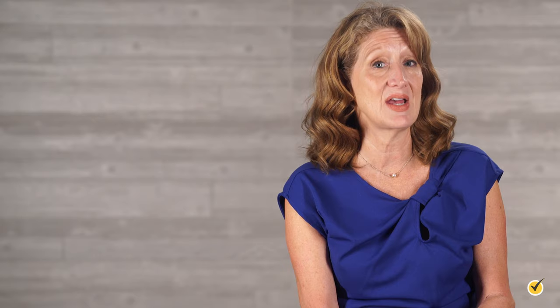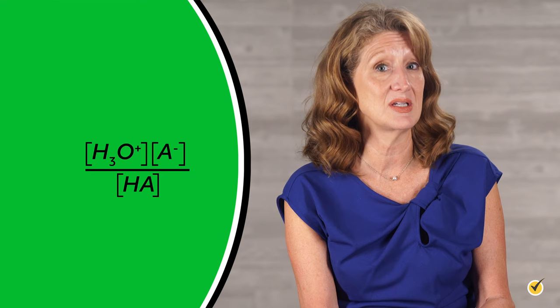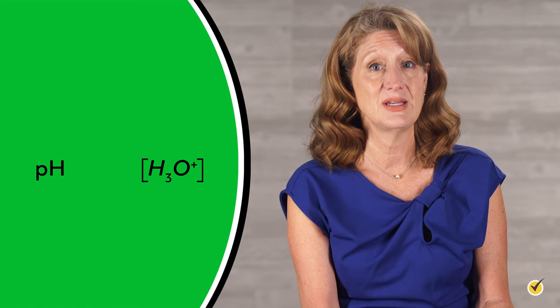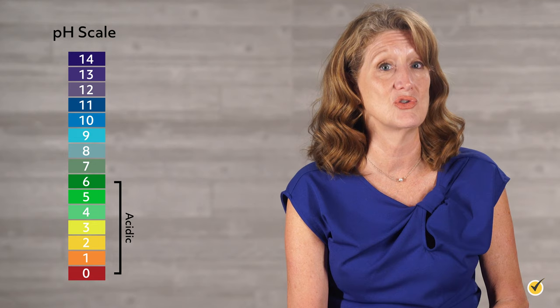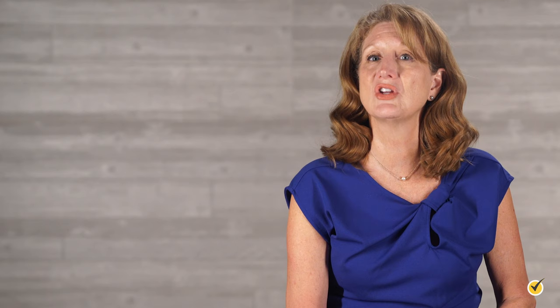We can quantitatively describe the dissociation of acids using the acid dissociation constant, Ka, which is just an equilibrium constant. As the strength of the acid increases, the concentrations of hydronium ions and the conjugate base increase, which increases our dissociation constant. We typically monitor the pH of a solution to measure the concentration of hydronium ions. As the concentration of H3O⁺ increases, the pH decreases. Any pH below 7 is considered an acidic solution, any pH above 7 is basic, and 7 itself — the pH of pure water — is neutral.